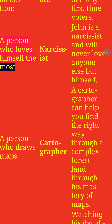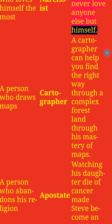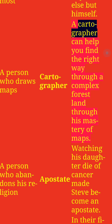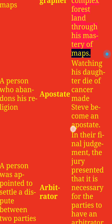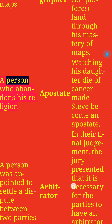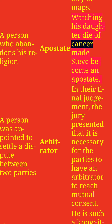A person who loves himself the most: Narcissist. John is a narcissist and will never love anyone else but himself. A person who draws maps: Cartographer. A cartographer can help you find the right way through a complex forest land through his mastery of maps. A person who abandons his religion: Apostate. Watching his daughter die of cancer made Steve become an apostate.